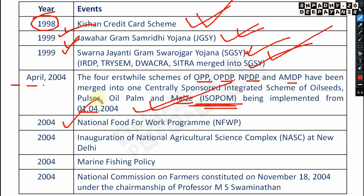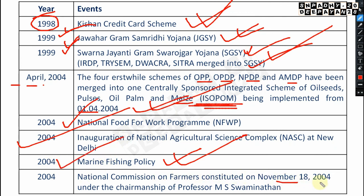In 2004, NASC — National Agricultural Science Complex — was inaugurated at New Delhi. The Marine Fishing Policy was also launched in 2004. On 18th November 2004, the National Commission on Farmers was constituted under the chairmanship of Professor M.S. Swaminathan.